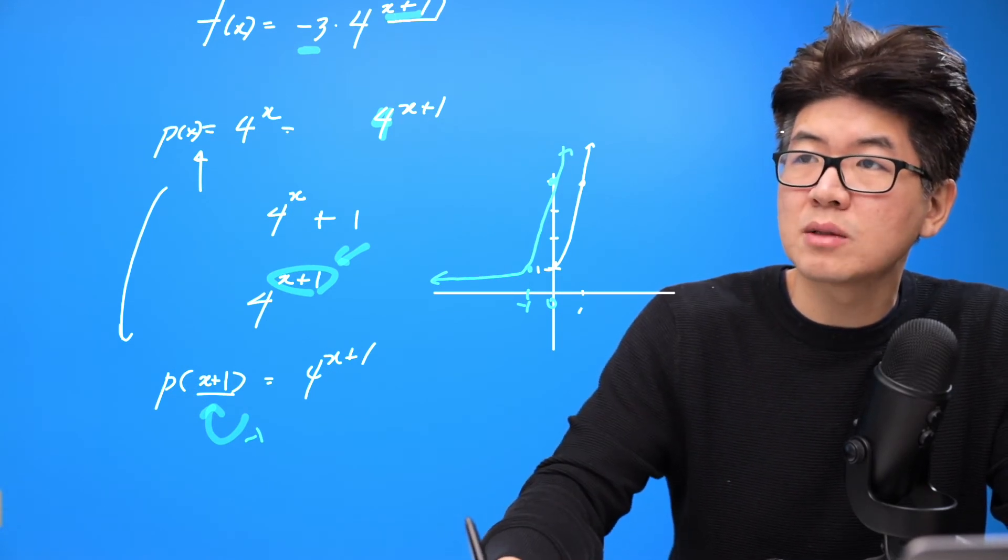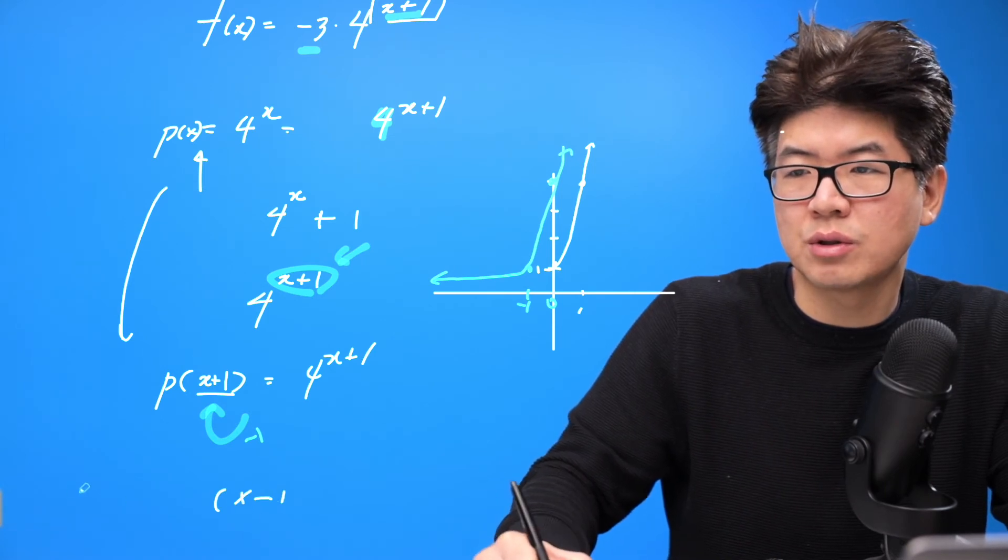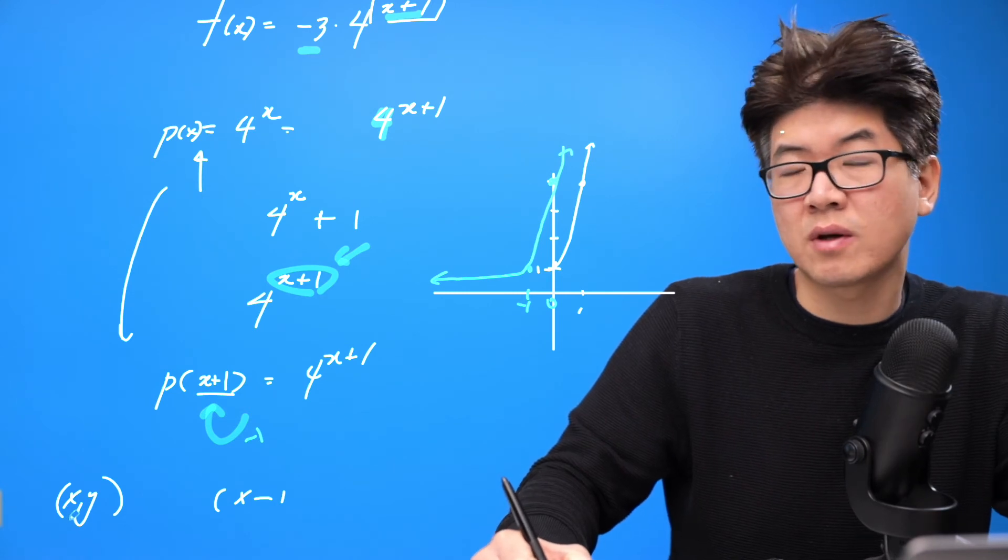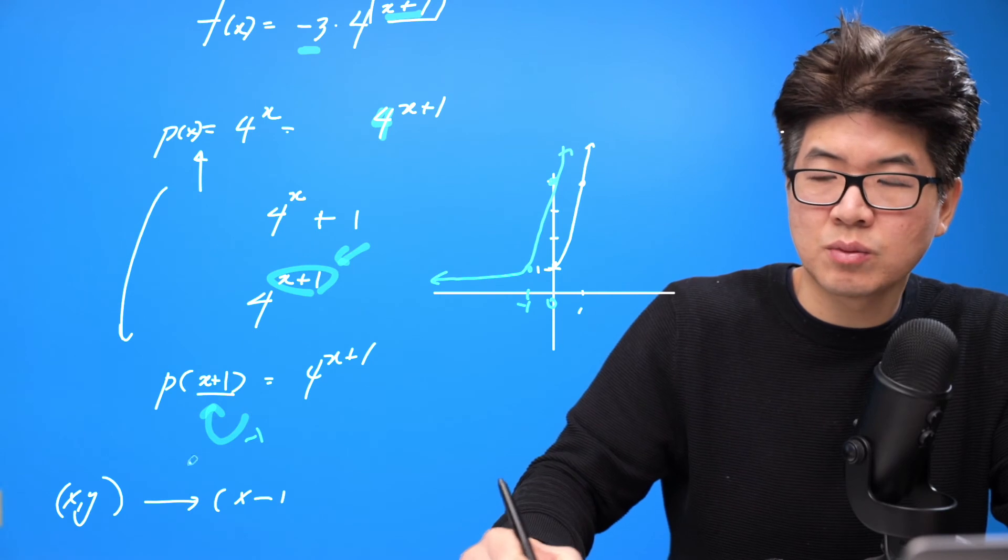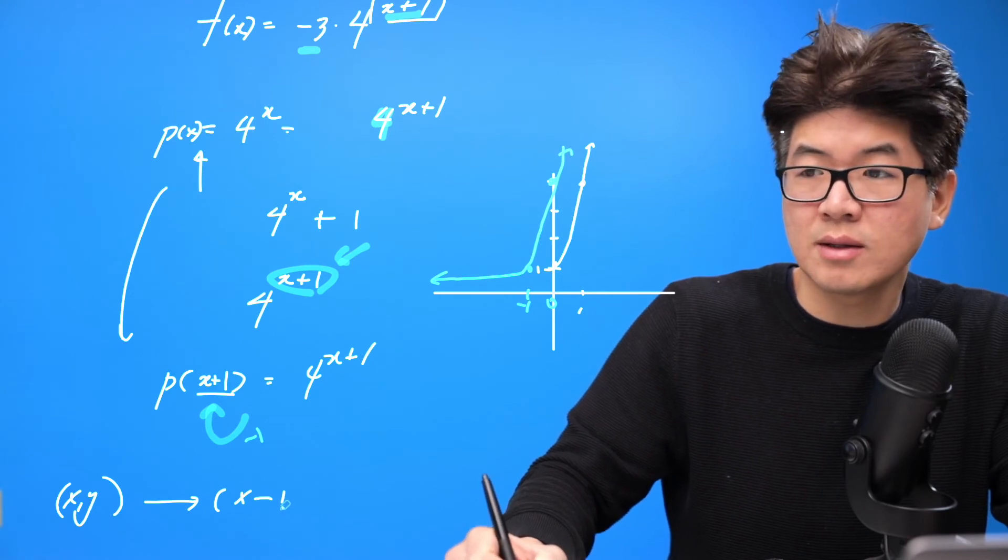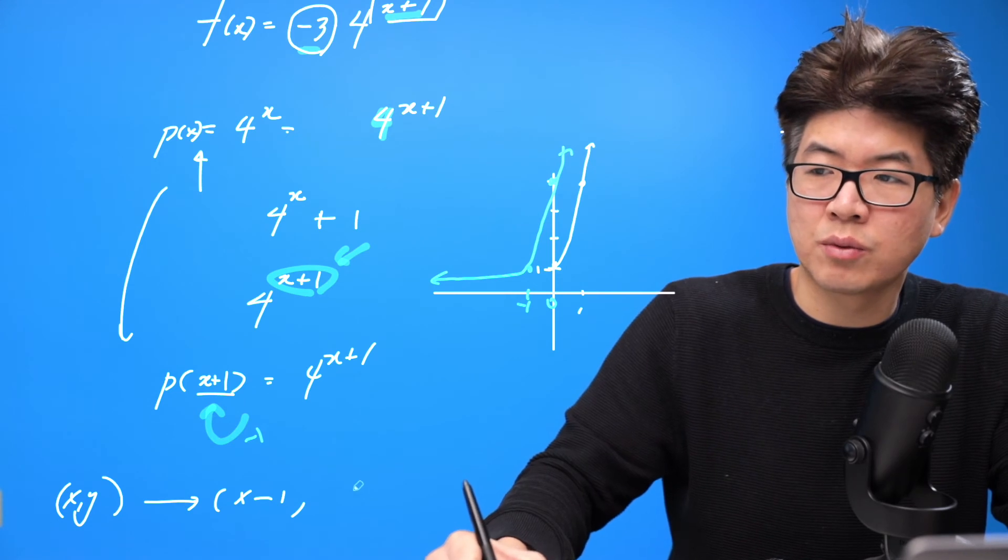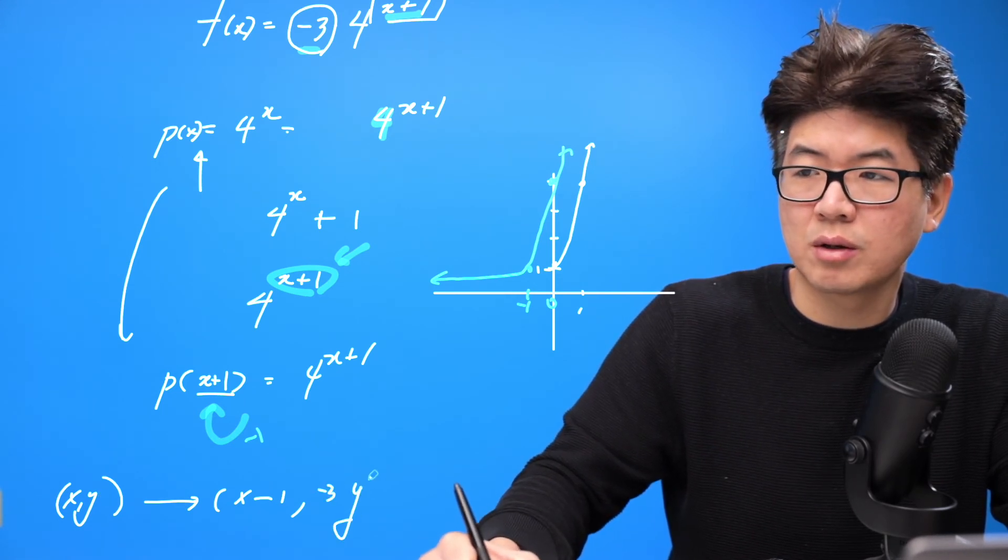So this x plus one causes the function, the original x, y value in the parent function, this represents the x, y value in the parent function transform so that because it's plus one, we have to put in values that are one less. And because of this negative three, we have to multiply the original y value times it by negative three.